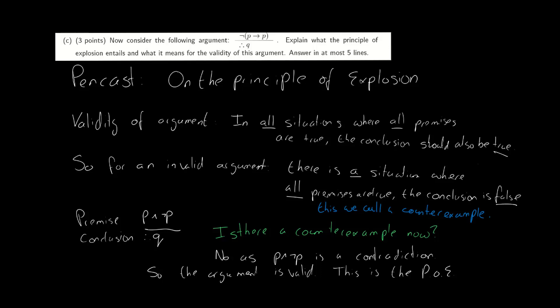In the exam question we see: not-p implies p. Using some rewriting, or perhaps you already know these rules by heart, you can find out that this is in fact a contradiction. As a result it is impossible to create a counter-example, and thus the argument is valid. That's it for this time — see you around for the next one.